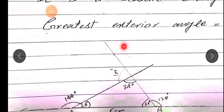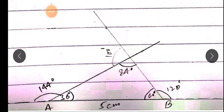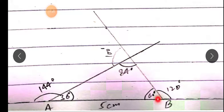Ab greatest exterior angle kaise find out kiya, yeh main yahan batati hun. Diagram dekho beta: pehle maine khud se measurement li hai AB = 5 cm. Scale ki help se ek line draw ki, end points ko name diya A aur B. Phir protractor ki help se: A pe angle draw kiya 36 degrees, B pe angle draw kiya 60 degrees, aur C pe angle draw kiya 84 degrees. A ko C se join kar diya, B ko C se - yeh hamari scalene triangle draw ho gayi, teenon angles different hain, teenon ki sides ki measurement bhi different hai.